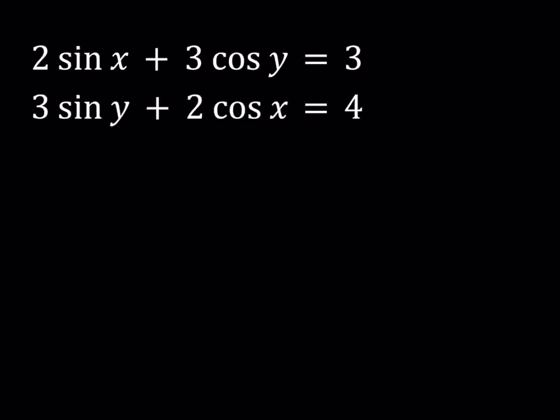We have 2 sine x plus 3 cosine y is equal to 3 and 3 sine y plus 2 cosine x is equal to 4. And we're going to be looking for x and y values.